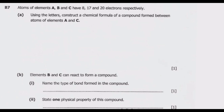The question is asking us to write a chemical formula. First, let us do the electronic configuration of all three elements. Element A has 8 electrons: the first shell has 2, and the second shell has 6 — because 8 minus 2 gives 6, and 6 is less than 8, so it has only 6 in the outer shell.